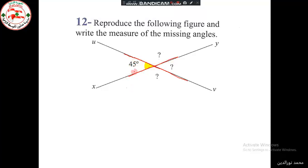Vertically opposite angles are equal. So this angle is opposite to this angle. Let's say this point is O. Then angle UOX equals angle YOV, and it equals 45 degrees, because they are vertically opposite angles. Now we have to find the remaining angles.